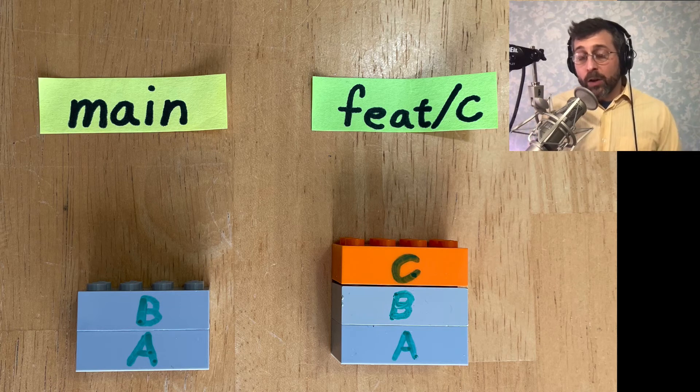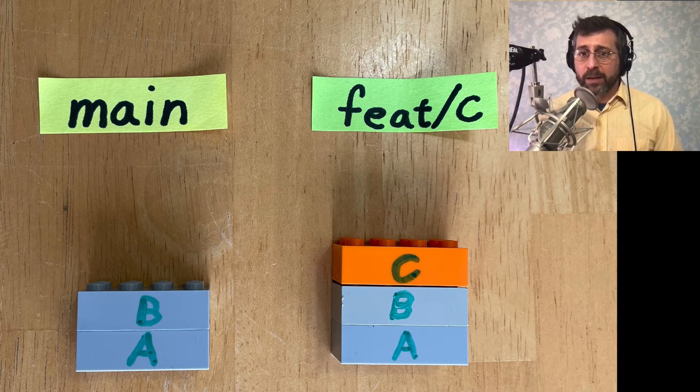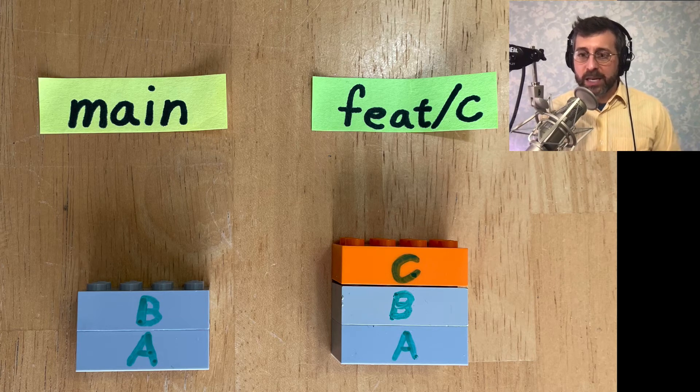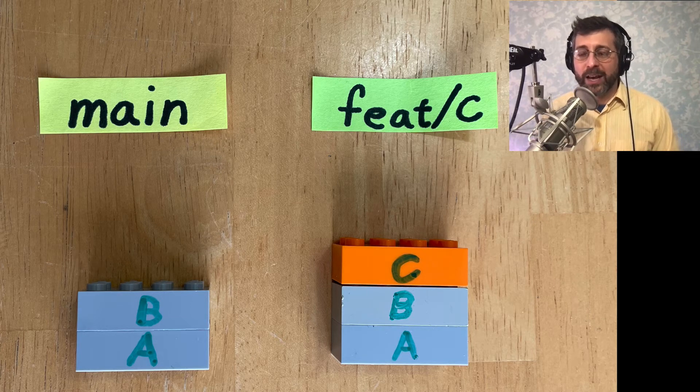And so we can take a look and we can say, okay, do all these commits appear within here? In this case, we've got commits A and B, and they both appear inside our feature branch. So yes, we'll be able to do a fast forward merge.